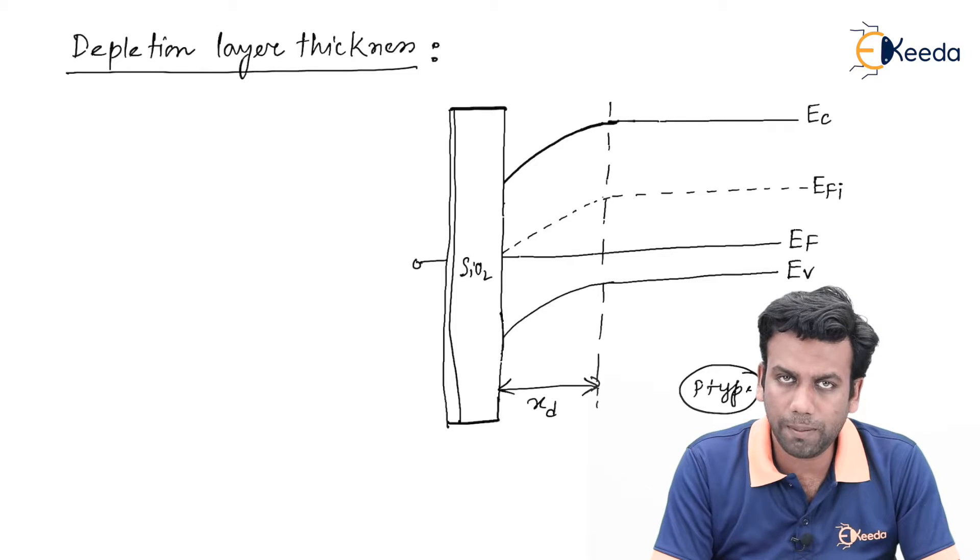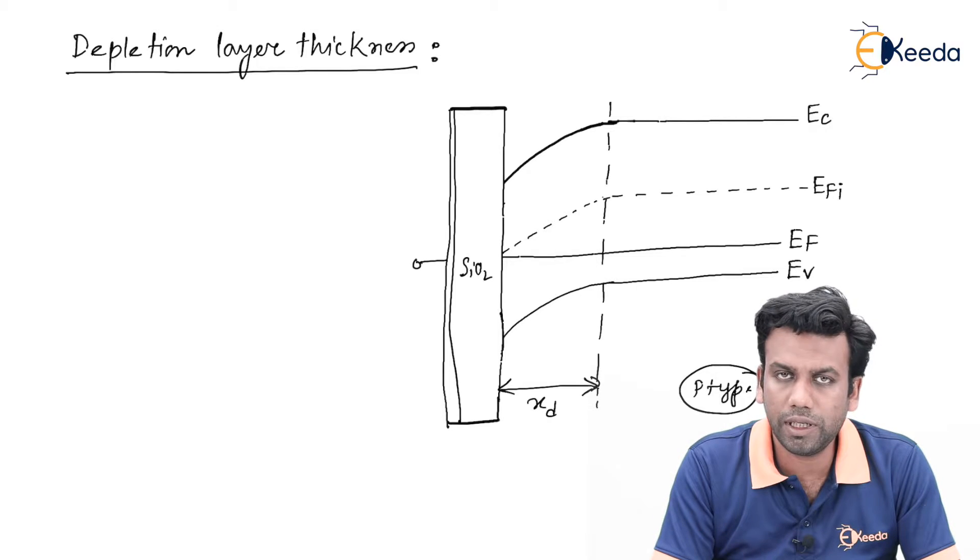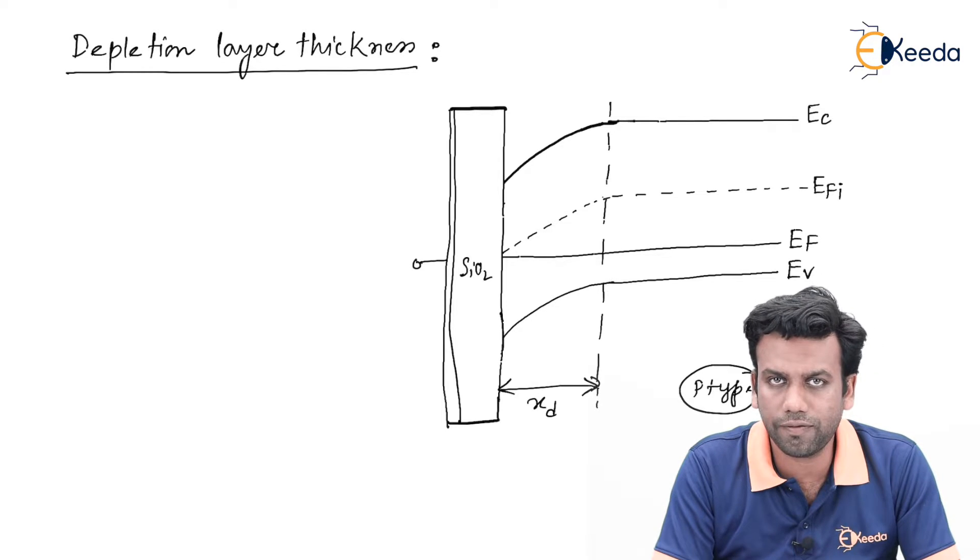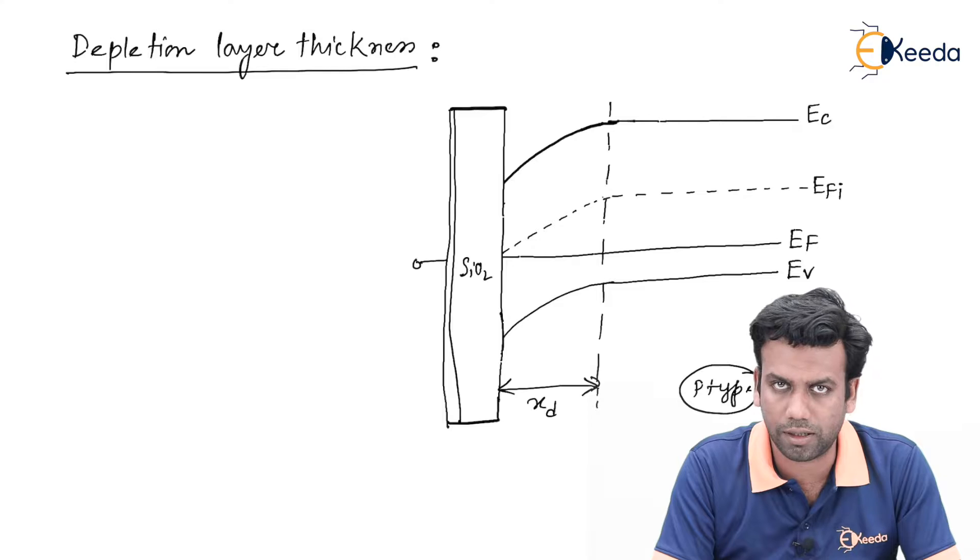As we know from the MOS capacitor, a depletion layer will be created just under the SiO2 layer, that is at the interface layer of the MOS capacitor, and this MOS capacitor is the heart of the MOSFET.